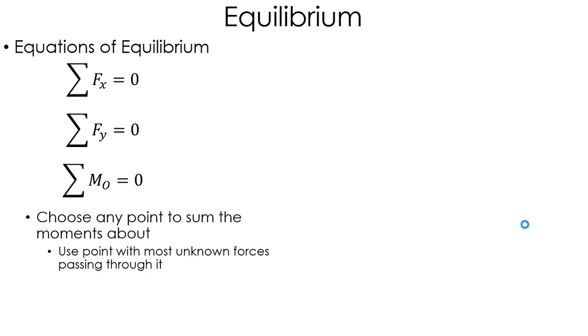Now, that moment equation, the nice thing is you can choose any point to take the moment about. And that point is important because when you're summing the moments of forces, you need to know where that force is. Now, choosing that point can help you solve the problem very good. And it's best to choose a point that has the most unknown forces passing through it. That way, those points have zero moment about that point and don't show up in the equation. And it reduces the number of unknowns in your moment equation, making it easier to solve algebraically.